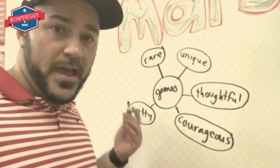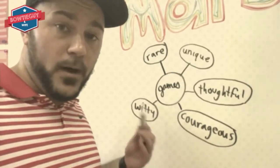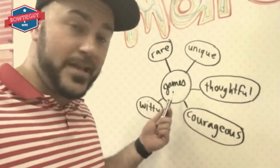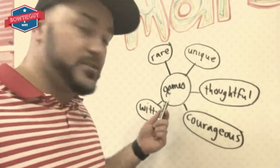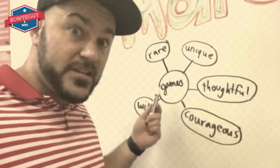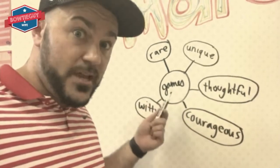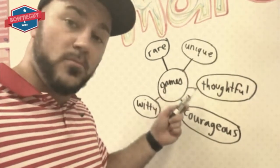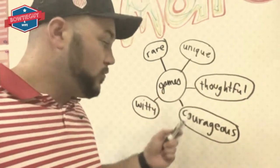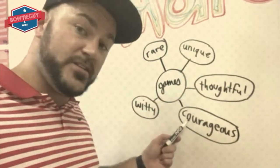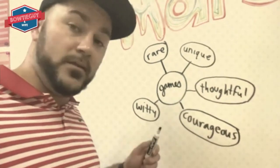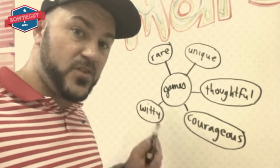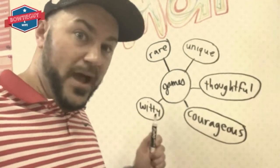This is what is called a bubble map. A bubble map is used to describe. So here's my name — James — and here are some adjectives to describe James: rare, unique, thoughtful, courageous, witty. My story, not yours. Five adjectives to describe me. This is a bubble map.